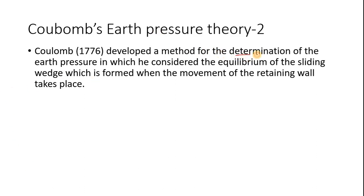As we already discussed, it is the determination of the earth pressure in which we consider the equilibrium of the sliding wedge. This is the sliding wedge, and it is maintained in equilibrium due to the reaction on the slip surface, active earth pressure or passive earth pressure, and weight W which acts vertically downward.